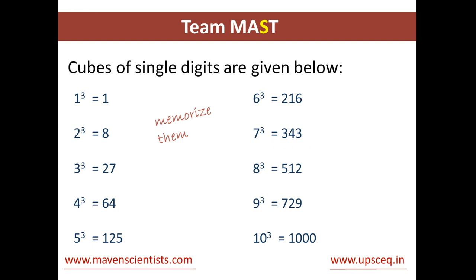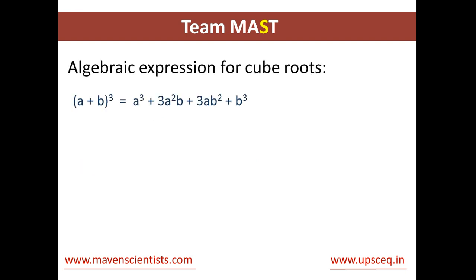First of all, you will need to remember the cubes of single-digit numbers. For example, 3 cube is 27, 8 cube is 512 and so on. Next, we need to know the algebraic expression for cube roots: (a + b)³ equals a³ plus 3a²b plus 3ab² plus b³.